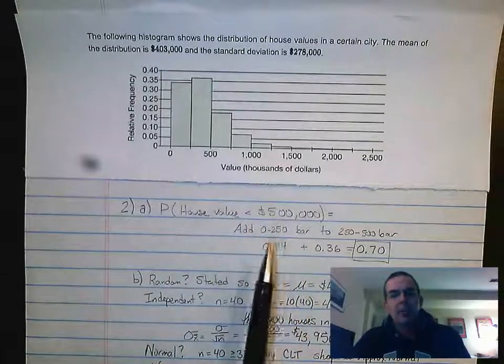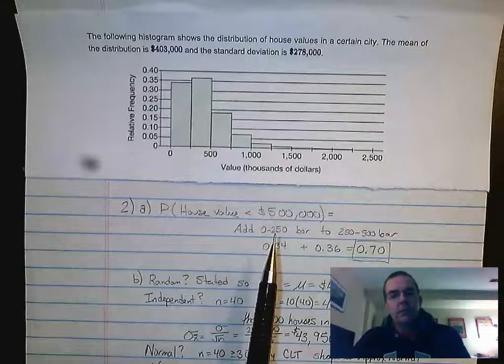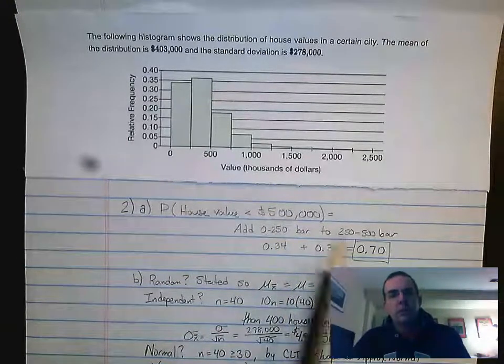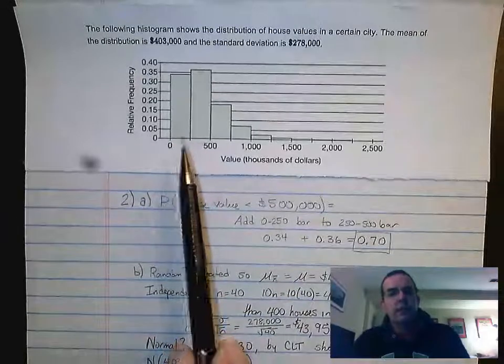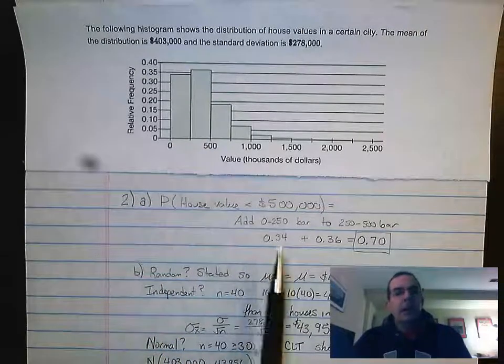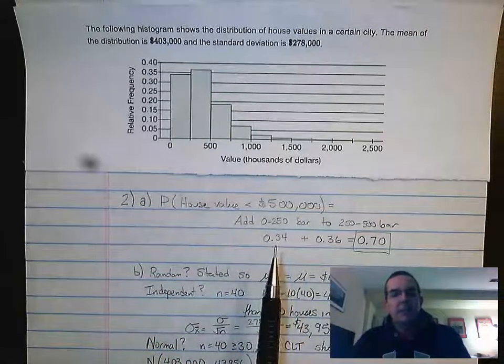And what we're doing is we're adding two bars, the 0 to 250 bar to the 250 to 500 bar. So this first bar here to the second bar. And what they're looking for you to do is give a best guess on this.